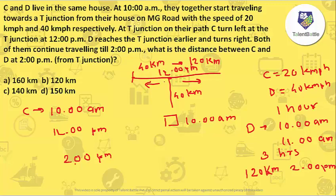C has covered 40 km on the left and D has covered 120 km on the right from the T-junction. Since they are on opposite sides, the total distance between C and D is 40 plus 120 equals 160 km. So the answer for this question is 160 km.